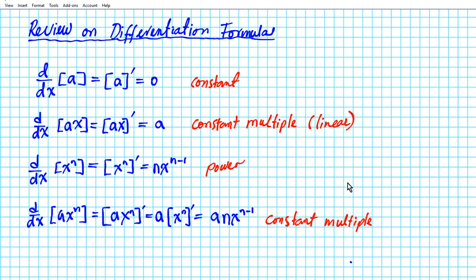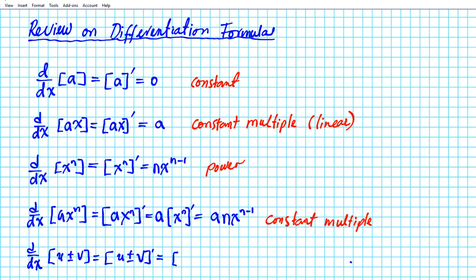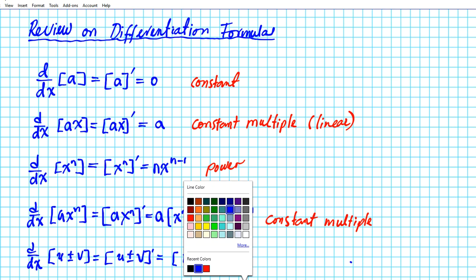There are two more rules in one: the sum and difference rules. If you want to find the derivative d/dx of a function u plus or minus v — written as (u ± v)' in Lagrange notation — you apply term-by-term differentiation. If you have a sum or difference of terms you can differentiate each individually, giving u' ± v'. This is known as the sum or difference rule.